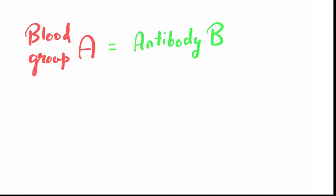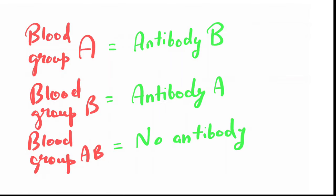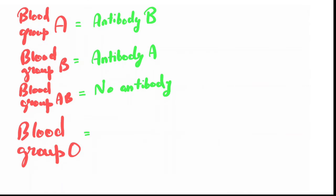Hence, blood group A will make antibodies against blood group B, and blood group B will make antibodies against blood group A. Blood group AB will not make any antibodies because it already has both A and B antigens on its own RBC. The RBC of blood group O does not have antigen A or B, and that's why blood group O will produce antibodies against both blood group A and blood group B.